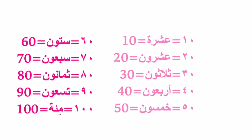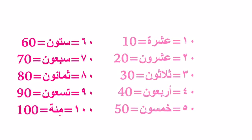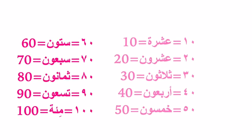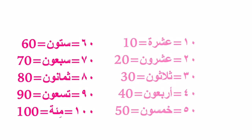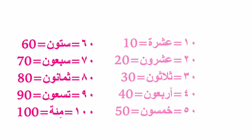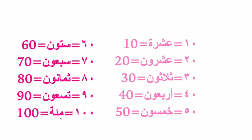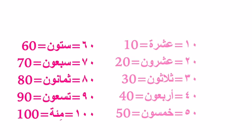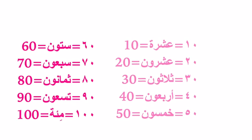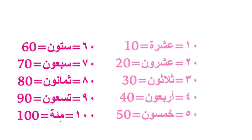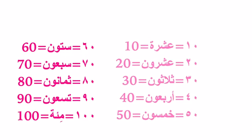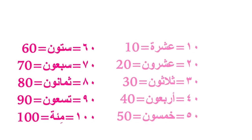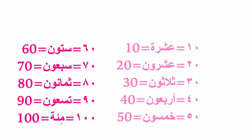The tens: ten: عشرة. Twenty: عشرون. Thirty: ثلاثون. Forty: أربعون. Fifty: خمسون. Sixty: ستون. Seventy: سبعون. Eighty: ثمانون. Ninety: تسعون. One hundred: مئة.